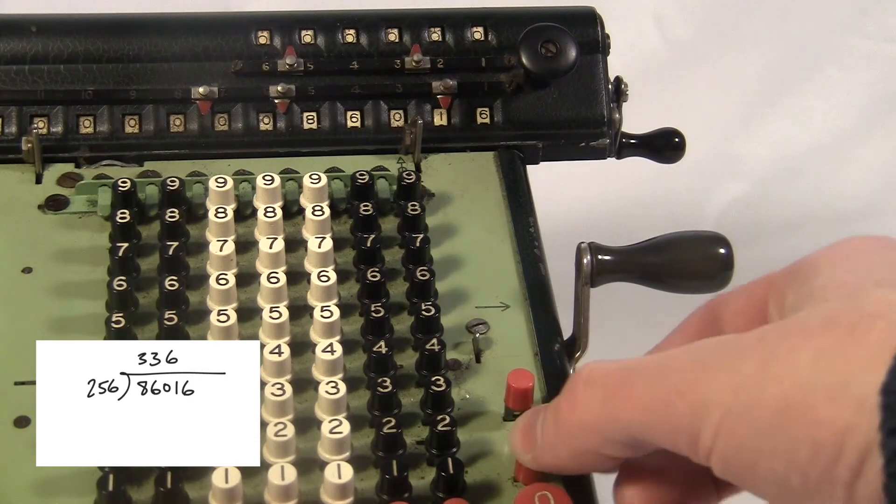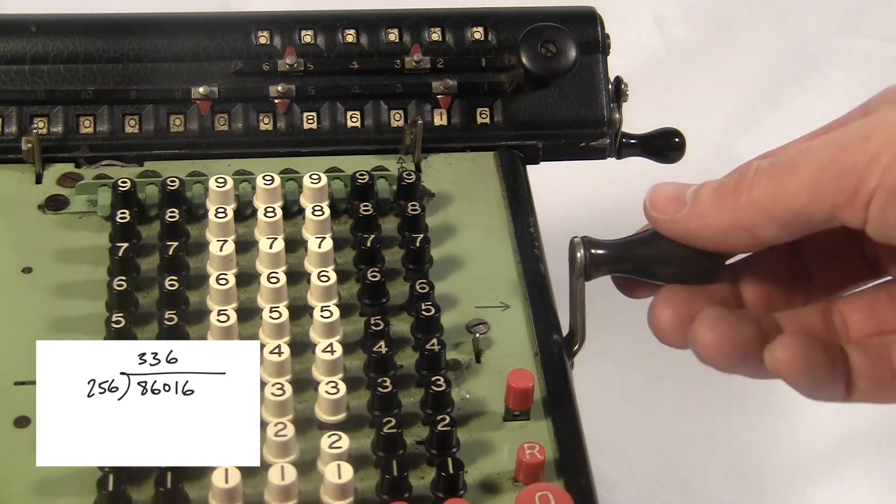Division works in a similar way, only you subtract instead of add. This time you start on the left and you work your way to the right, just like in long division. And the answer will end up in the top register.